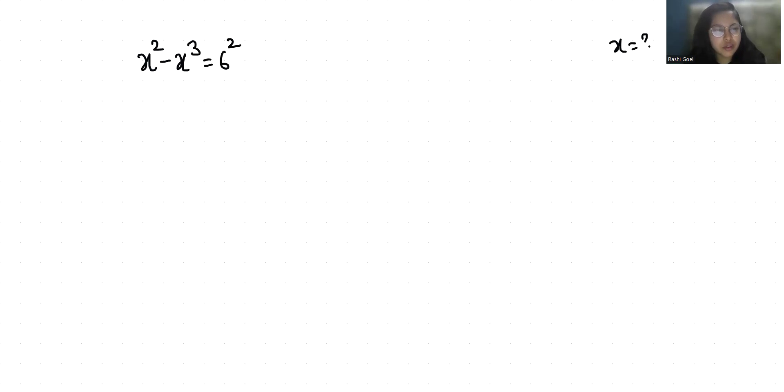Let's start with today's video solution. So x squared minus x cubed equals 36. We can write x squared minus x cubed minus 36 equals 0, or x squared minus x cubed, this negative 36 I can write